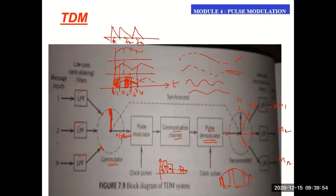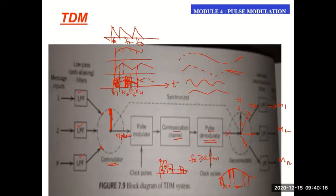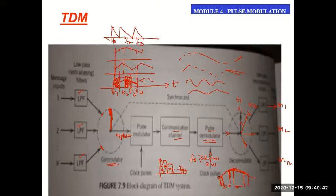This is a continuous process — the commutator repeatedly returns to each message, taking successive samples at fixed time intervals. The in-between wave shape can be reconstructed effectively if sampling is done at the Nyquist rate — at greater than or equal to twice the message bandwidth, 2fm or 2W. This is the advantage of TDM: we need not send the whole message, saving power and cost, while still recovering the message properly using efficient reconstruction techniques.